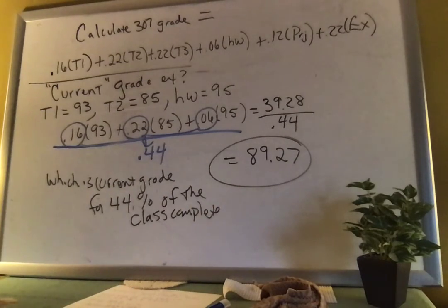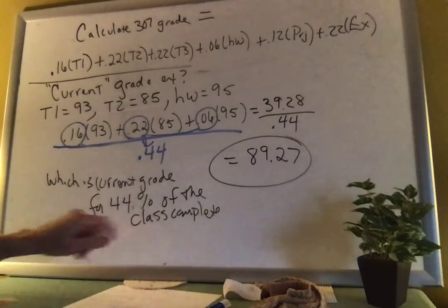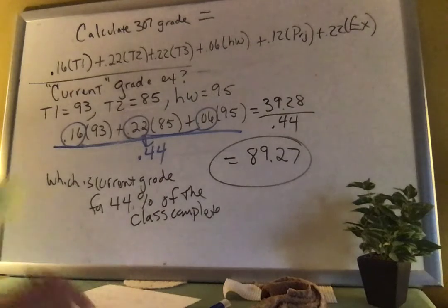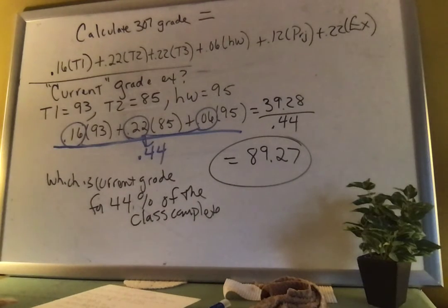So again, that's the current grade with 44% of the class completed. Let me look at my little personal notes, see if there was anything else I wanted to mention. No, that's it. So that's how you calculate your grade and that's how you can figure out at any given day, what is your current grade in my class? That is it.